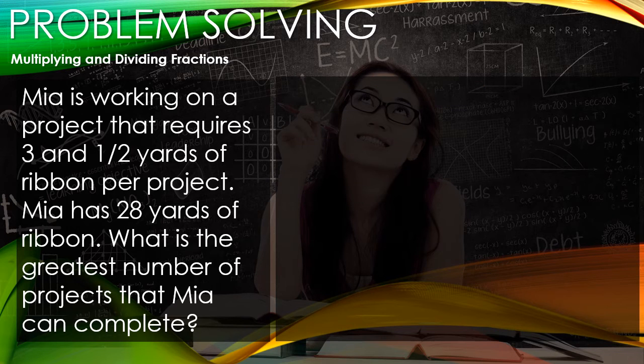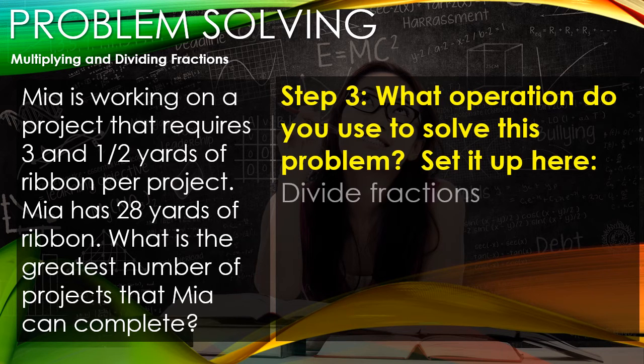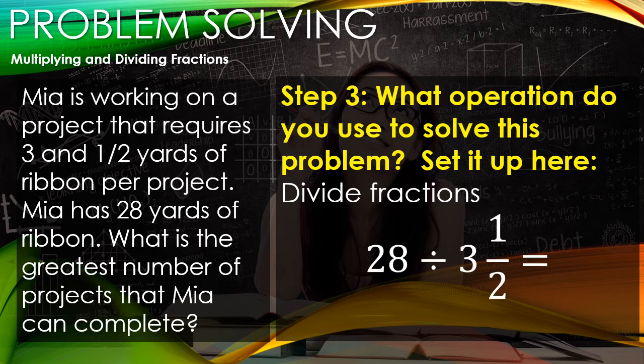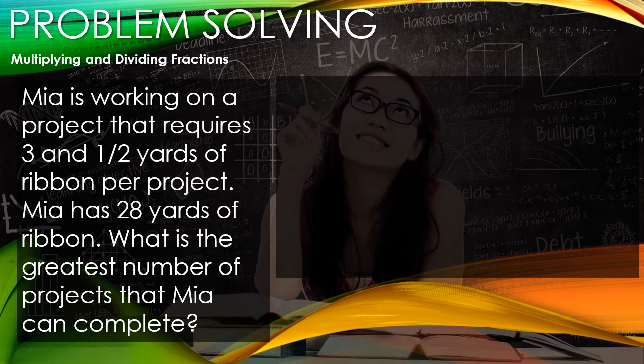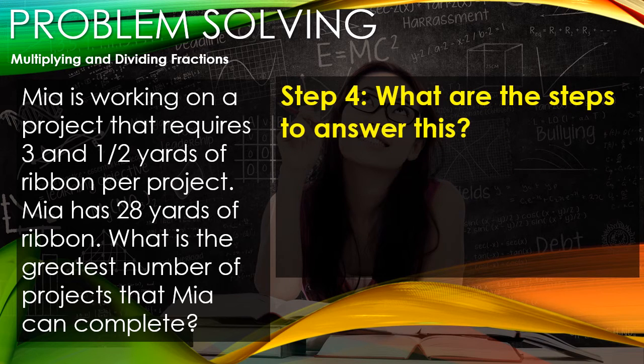So the operation we're going to do is divide these two numbers. We'll set this up as: the total number of yards she's starting with is 28, and she's going to divide that by each project being 3 and 1/2 yards. For step 4, we are so close to completing this word problem.